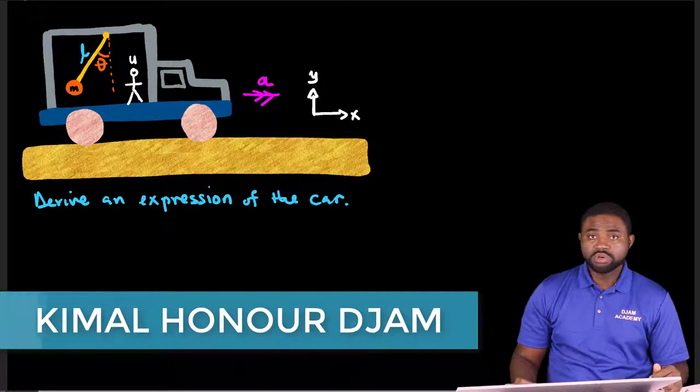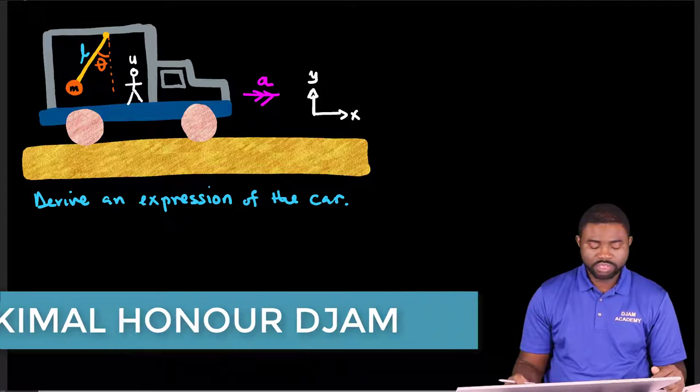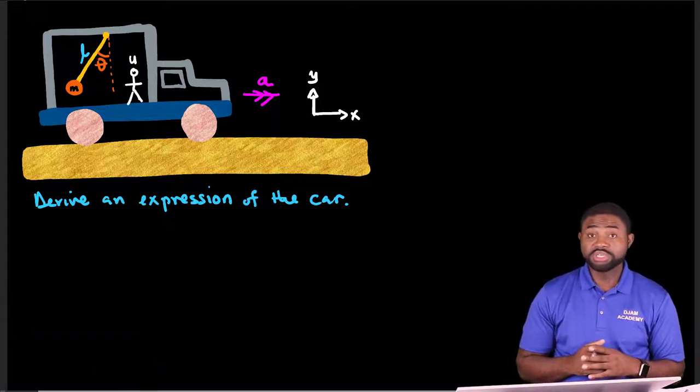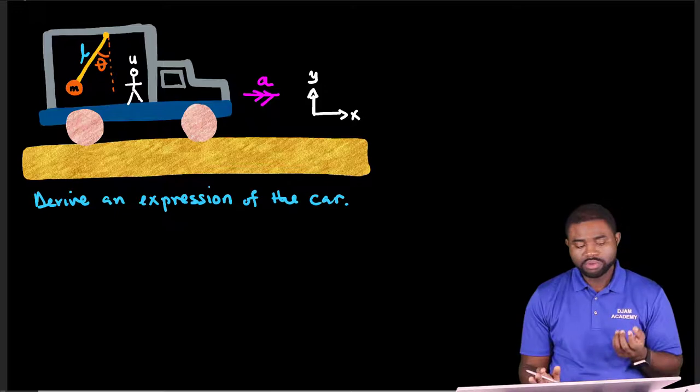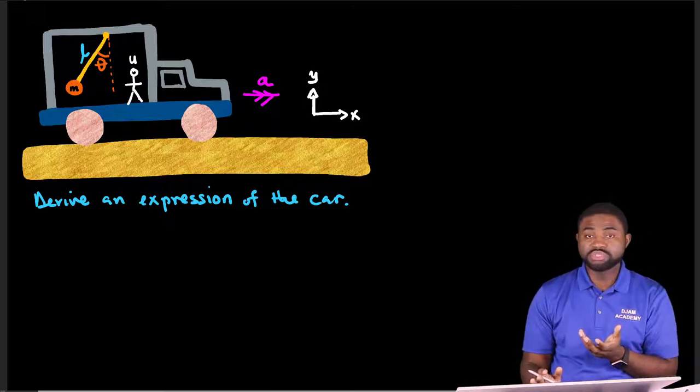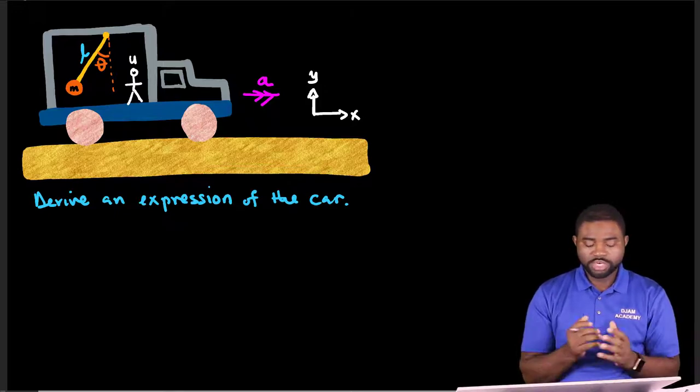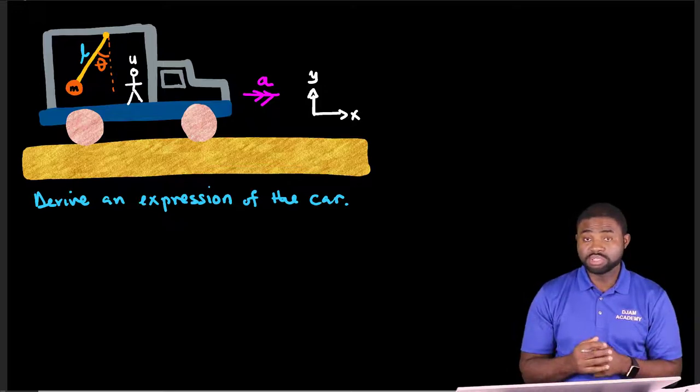Hello everyone and welcome to Jam Academy. In this example, you are standing behind a truck and suddenly the truck starts moving forward. Now what you observe is a pendulum hanging behind the truck sweeps to the back because of its inertia. So the question is, using this scenario, can you determine the acceleration of the car?